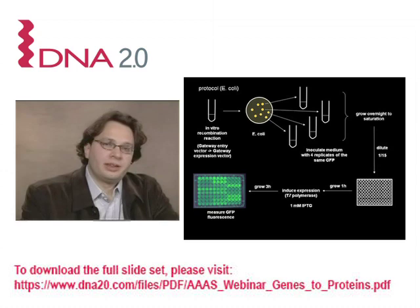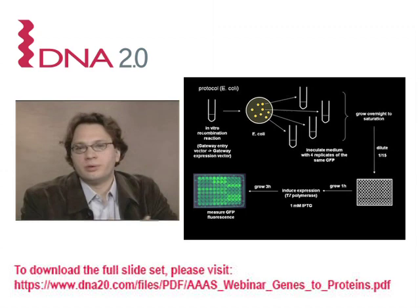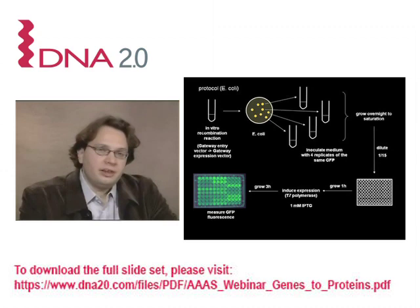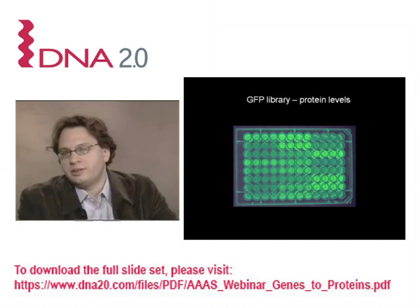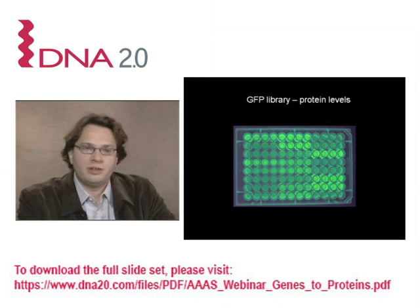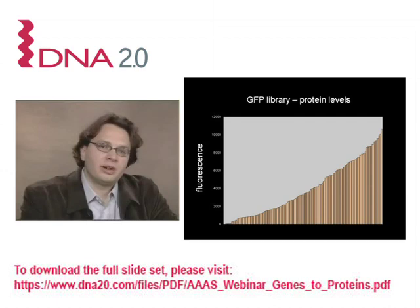We then expressed these constructs in E. coli cells, starting with an in vitro recombination reaction based on the Gateway system. We grew E. coli overnight in quadruplicate, induced expression by IPTG, and measured fluorescence three hours post-induction. The resulting constructs showed a large variation in fluorescence. Here is a photograph of a 96-well plate showing different constructs in quadruplicate, and you can see visibly a lot of variation in the fluorescence or protein levels.